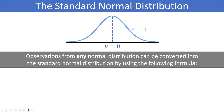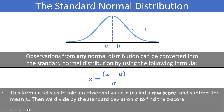Observations from any normal distribution can be converted into the standard normal distribution — that is, a Z score — using the following formula. To find the Z score, take your value on your distribution, subtract the mean of that variable, and divide by the standard deviation. So Z = (X − μ) / σ, where X is the raw score, μ is the mean, and σ is the standard deviation.